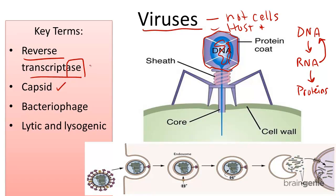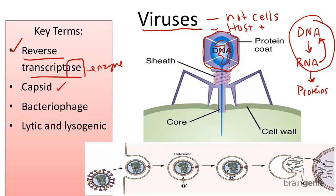Reverse transcriptase is the name of the enzyme that enables viruses to reverse transcription — this process of going from RNA back to DNA. Transcription is the process in humans of coding our DNA into messenger RNA in order to produce proteins like enzymes. You may have learned about transcription when studying protein synthesis and DNA. Viruses have this unique ability to use our own machinery to produce more of their own RNA and protein codes.